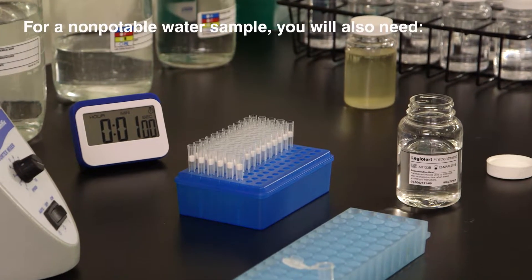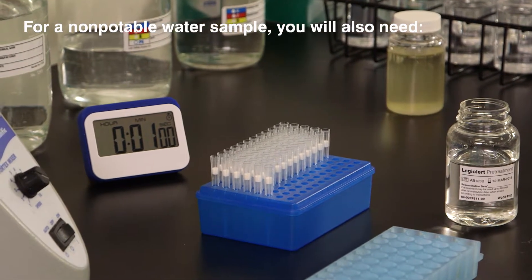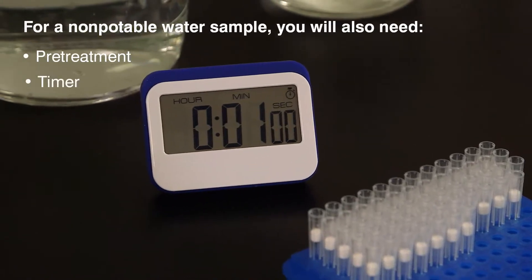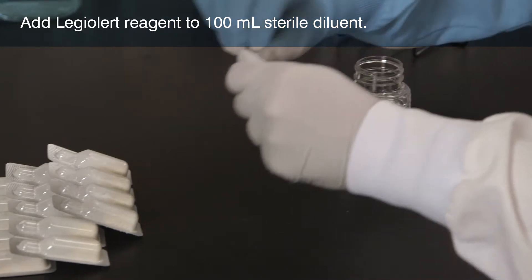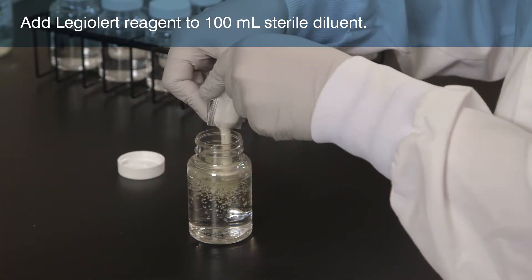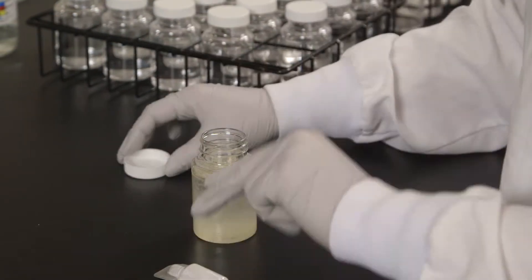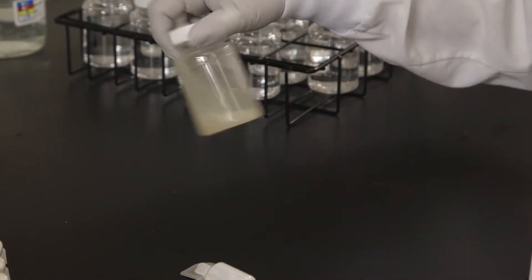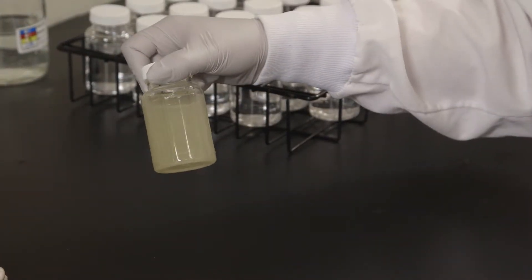To prepare a non-potable water sample, you will also need the LEG-ALERT pre-treatment kit and a 1-minute timer. Snap open the reagent pack and pour the powder into 100 mL of sterile diluent. Cap the vessel and shake until the contents are dissolved. The water may remain cloudy. Set this vessel aside.